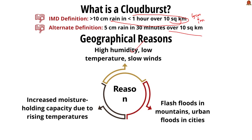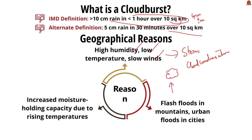The geographical reasons for cloudburst include high humidity, low temperature, and slow winds — these create a perfect storm for rapid cloud condensation leading to cloudburst. In simple terms, as temperature rises, the atmosphere increases its moisture-holding capacity, resulting in short, intense rainfall that causes floods in mountains and urban flooding in cities.